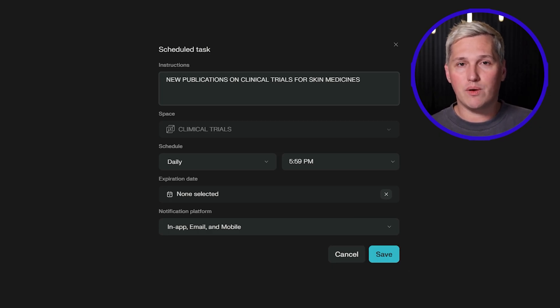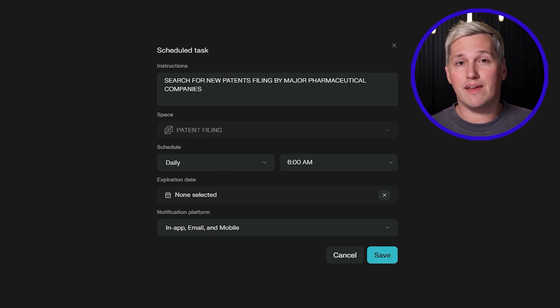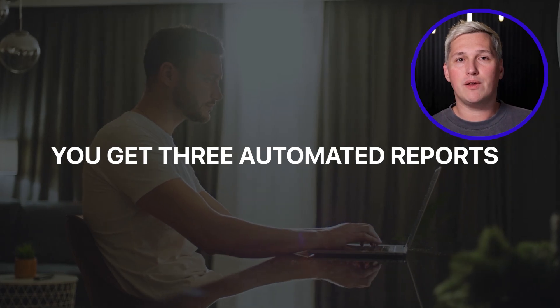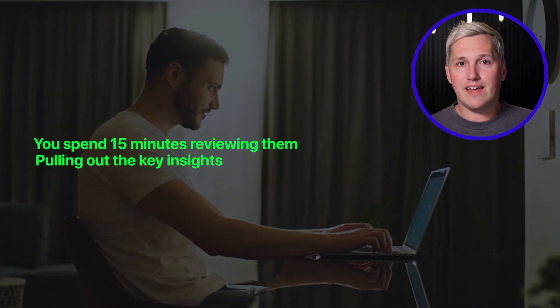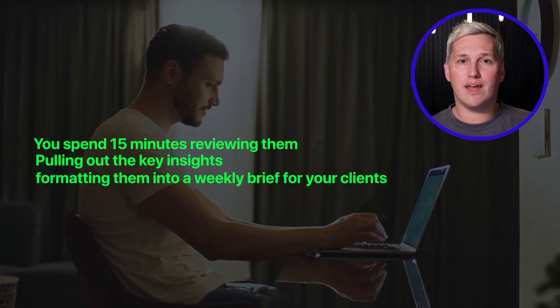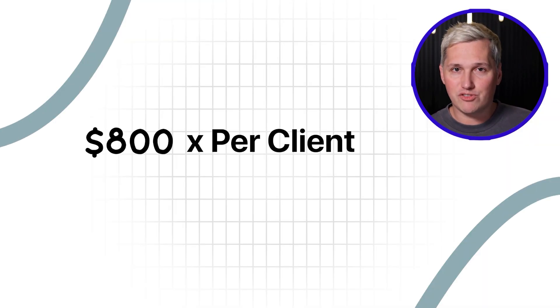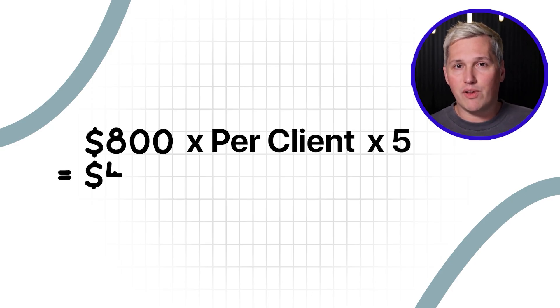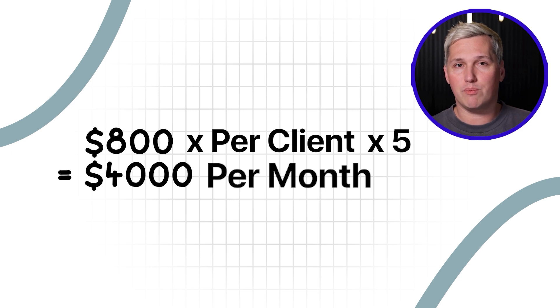Imagine you are a freelancer who specializes in the pharmaceutical industry. You set up three spaces in Perplexity: one tracks FDA approval announcements, one monitors clinical trial publications, one follows patent filings from major drug companies. You build recurring tasks that search these topics daily using specific date filters and source restrictions. Every morning you get three automated reports. You spend 15 minutes reviewing them, pulling out the key insights, and formatting them into a weekly brief for your clients. You charge $800 per month per client for ongoing industry intelligence. With five clients, that is $4,000 per month in recurring revenue for about 90 minutes of actual work per week. The rest runs automatically. Your clients think you have a research team. You are just one person with the right workflow and free tools.